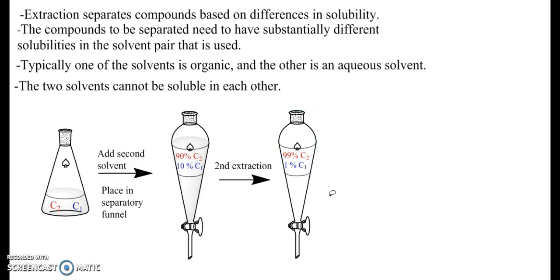If we did a third extraction, again we would leave behind ten percent of that one percent of C1 that's left, and you can see how very quickly most of what is left in the upper organic layer would be C2. And typically when we do extractions like this, we do do multiple rounds of extractions. And this was our first extraction, second extraction, third extraction.